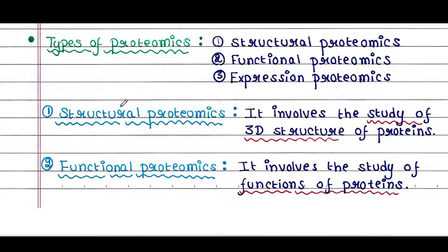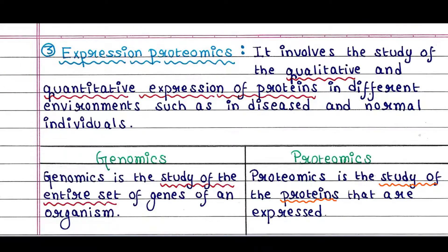There are three types of proteomics: structural proteomics, functional proteomics, and expression proteomics. Structural proteomics involves the study of the 3D structure of proteins. Functional proteomics involves the study of the functions of proteins. Expression proteomics involves the study of the qualitative and quantitative expression of proteins in different environments, such as in diseased and normal individuals.